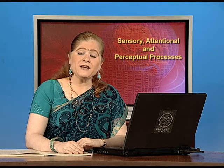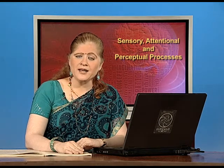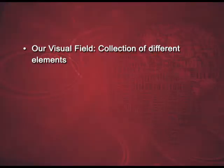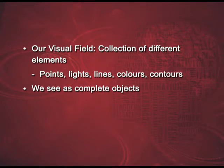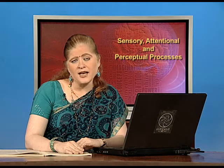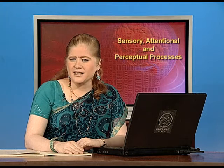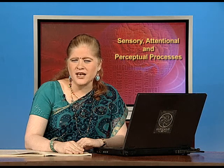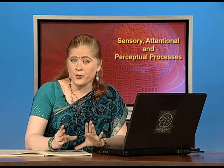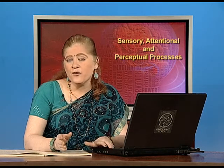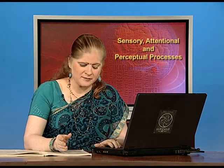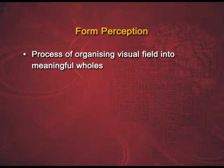brightness and shape. You might have noticed a very interesting phenomenon now that you understand a bit about sensation and perception. Our visual field is actually a collection of different elements like points, lights, lines, colours and contours. But we see these as complete wholes — as complete objects and not as parts. For example, you say 'this is my cycle.' You do not say these are paddles, saddle, chain, basket, carrier, seat and then all that together makes a cycle. The ability to see things in their completeness and to know the objects in total is a very interesting human and even animal capability. This is known as form perception. By definition, form perception is the process of organizing the visual field into meaningful wholes.